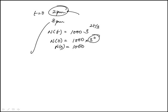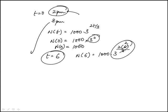At 8pm, 6 hours have elapsed, so t is 6. N of 6 would be 1,000 times 3 to the power of 2 times 6 over 3, which is 3 to the 4, and that's 81.